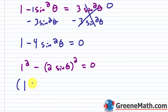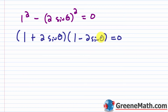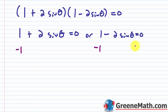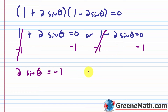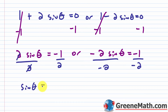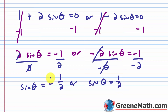Setting each factor equal to zero: 1 plus 2 sine theta equals 0, or 1 minus 2 sine theta equals 0. Solving the first: sine theta equals negative 1/2. Solving the second: negative 2 sine theta equals negative 1, so sine theta equals 1/2. Combining, we get sine theta equals plus or minus 1/2.